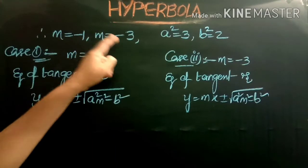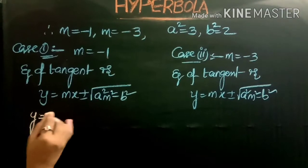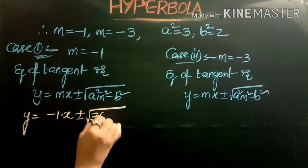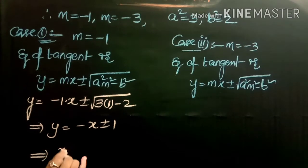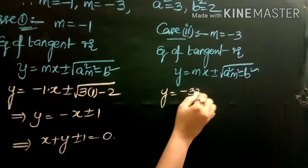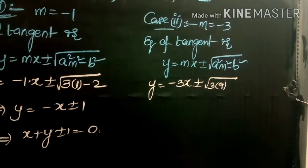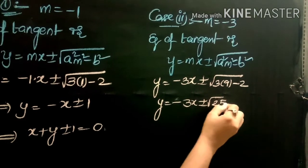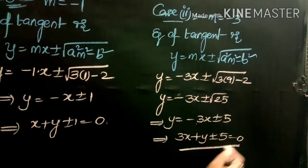Substituting m equals -1: y equals -x plus or minus square root of (3·1 minus 2) equals -x plus or minus 1. Therefore the tangent equation is x plus y plus or minus 1 equals 0. For m equals -3: y equals -3x plus or minus square root of (3·9 minus 2) equals -3x plus or minus square root of 25 equals -3x plus or minus 5. Therefore the tangent equation is 3x plus y plus or minus 5 equals 0. These are the required equations of the tangents.